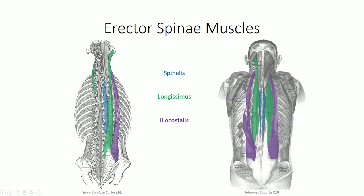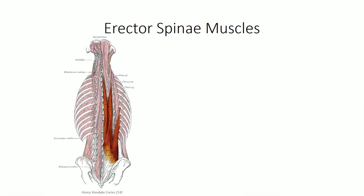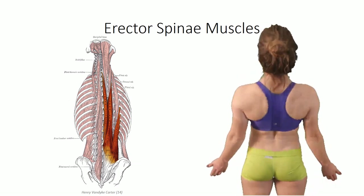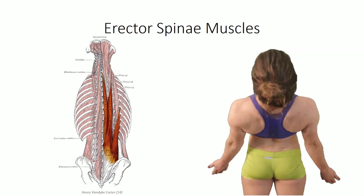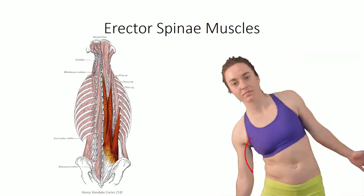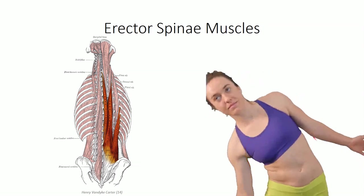Again, they receive their neurovascular supply segmentally through dorsal branches. Despite the three divisions, the muscles work synchronously together. They serve as the chief extensor of the vertebral column when they contract bilaterally. Unilaterally, contraction produces ipsilateral flexion of the trunk.